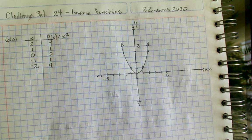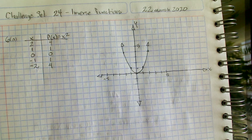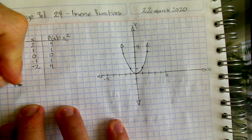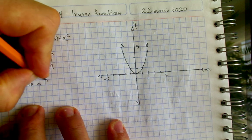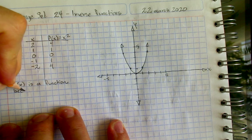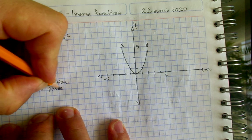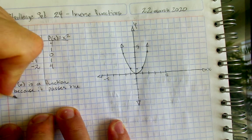The question in letter A is also asking us is f of x a function and how do we know? Well f of x is a function and you know why - because it passes the vertical line test.